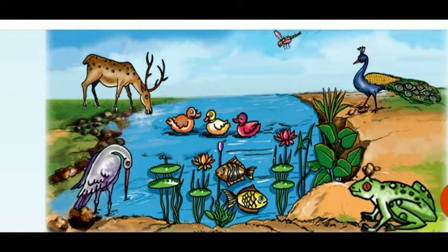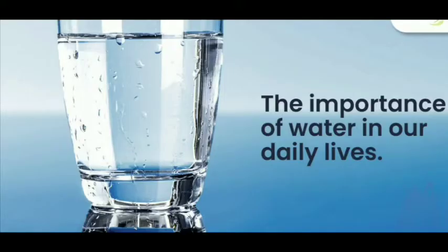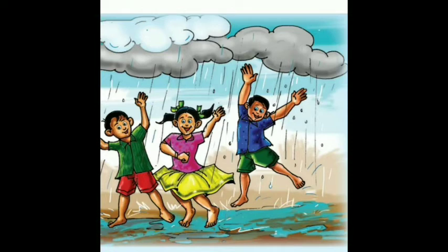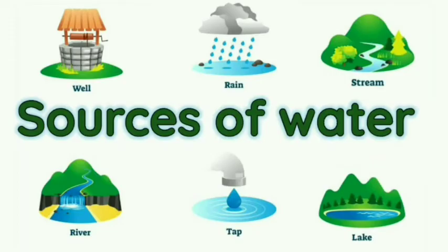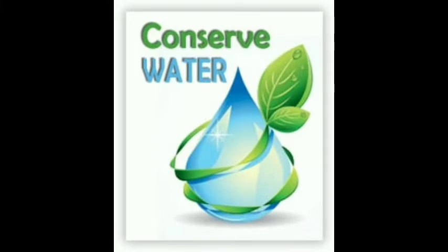The water we have is not enough. We need a large amount of water, but we get water only from rain, which fills lakes, rivers, ponds, seas, oceans, etc. So we have to save water for future use. Conservation of water means you have to conserve and save the water for future use.